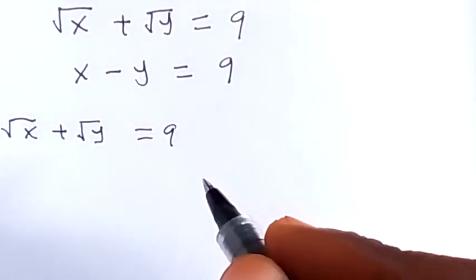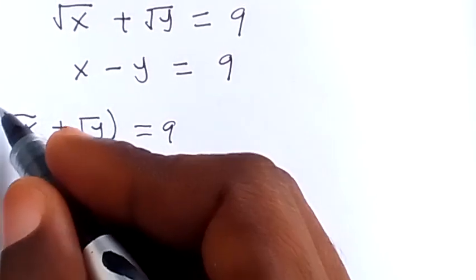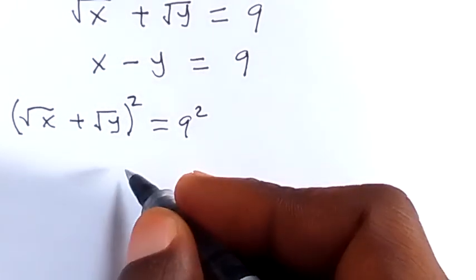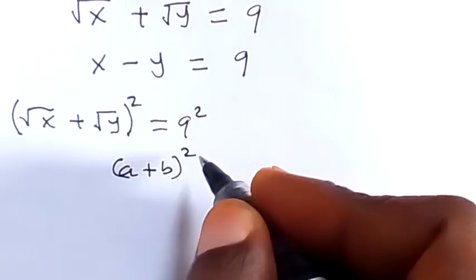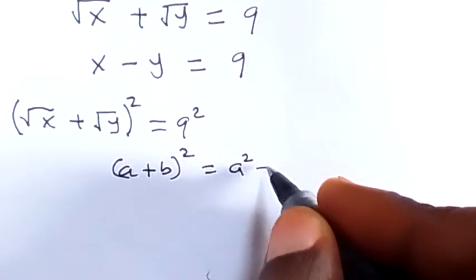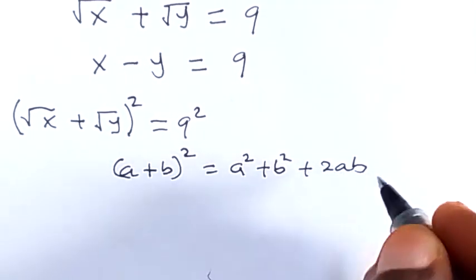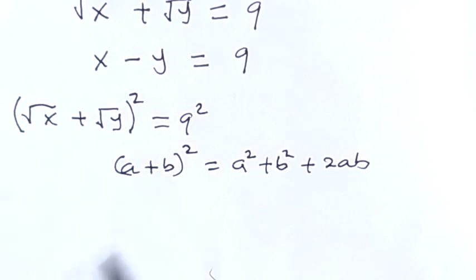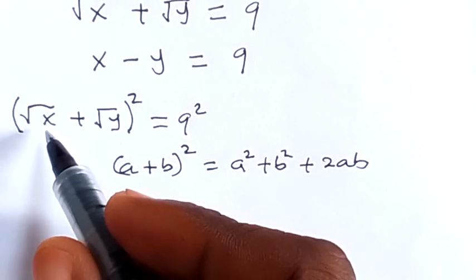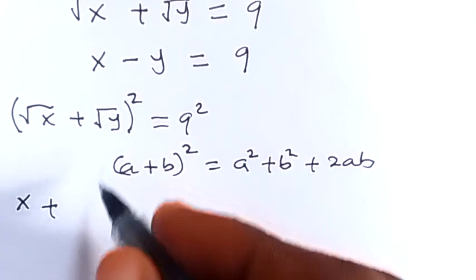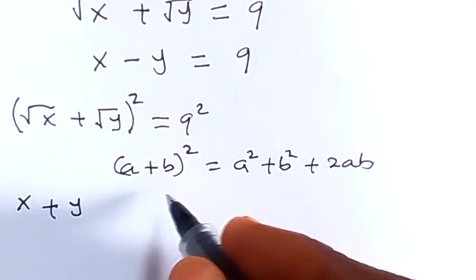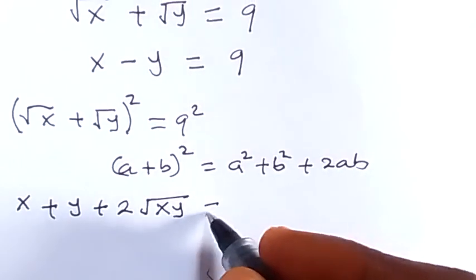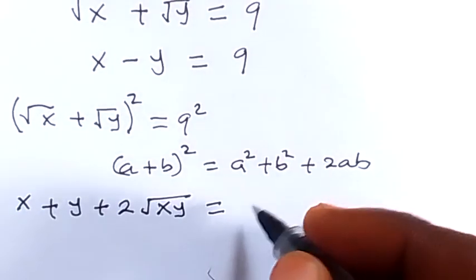Now let's take the square on both sides. Applying the identity of (a + b)² equals a² plus b² plus 2ab, where a is root x and b is root y. So a² gives us root x squared, which is x, plus root y squared, which is y. Then plus 2 root x times root y, which can be written as root xy. Then equals to 9 squared, which is 81.